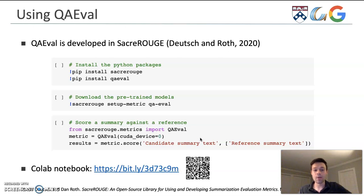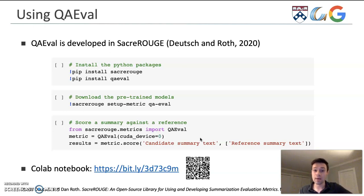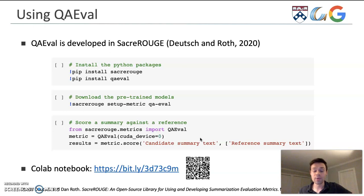One difficulty in getting the summarization community to evaluate summaries with metrics other than ROUGE is the difficulty of using those metrics. So we've put a lot of effort into a library called Sacre Rouge, which makes it easy to evaluate not only with QA but with several other evaluation metrics including ROUGE. Hopefully people will be able to use it.